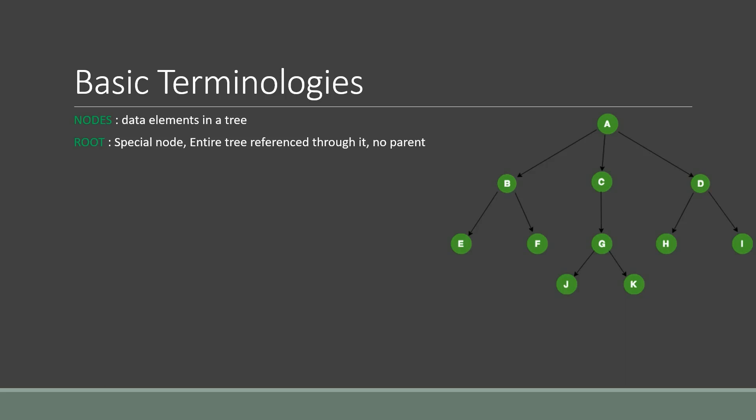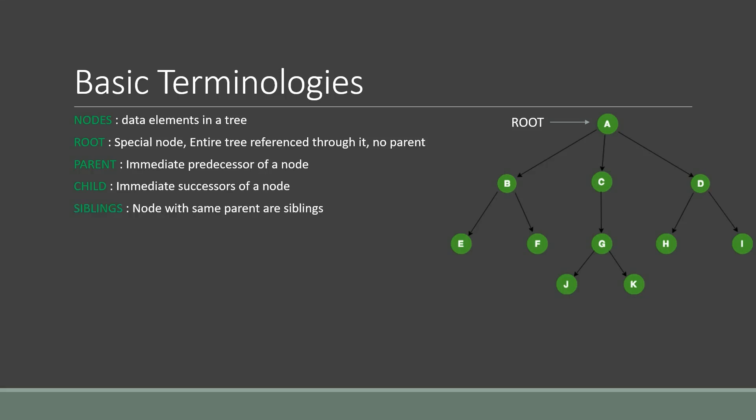The root is a special node to which the entire tree is referenced. The root has no parent. The parent of a node is its immediate predecessor — for example, A is the parent of C. The child of a node is its immediate successor — for example, G is the child of C. Siblings are nodes with the same parent — for example, E and F are siblings because they share the same parent.